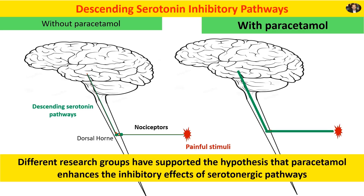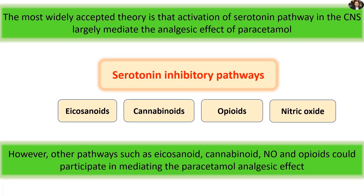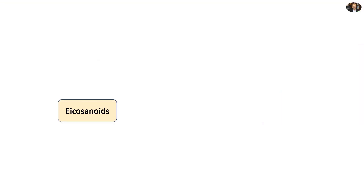Different research groups have supported the hypothesis that paracetamol enhances the inhibitory effects of the serotonin pathways. Now let's go back to the other suggested mechanisms of paracetamol action, and this time we will go through the eicosanoid system.